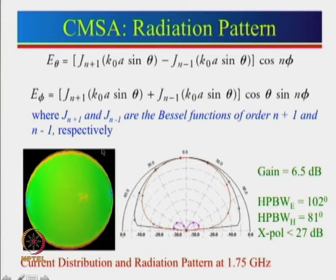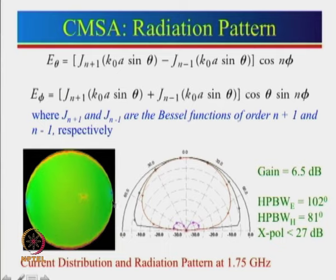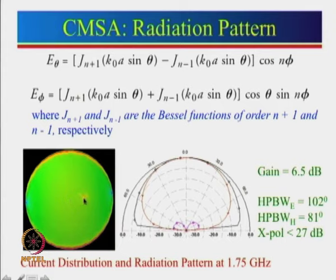For the fundamental TM11 mode, the current distribution shows: voltage is maximum at the feed, goes to 0, then to negative. Current is 0 where voltage is maximum and maximum where voltage is 0. Red color implies maximum current density; blue implies minimum. This shows the fundamental 1-mode variation along the circumference and 1 half-wavelength variation along the diameter.